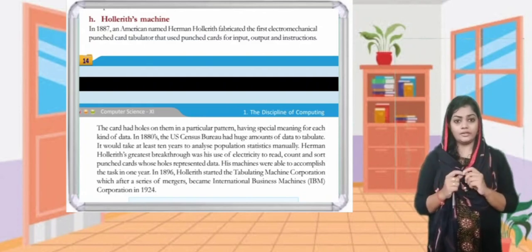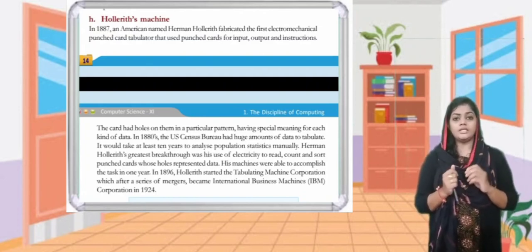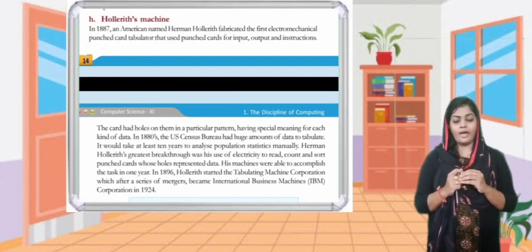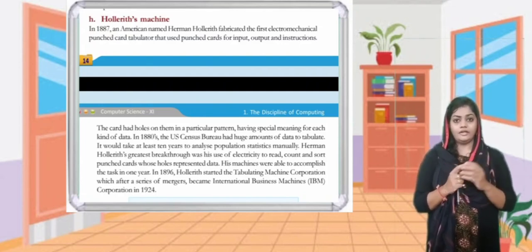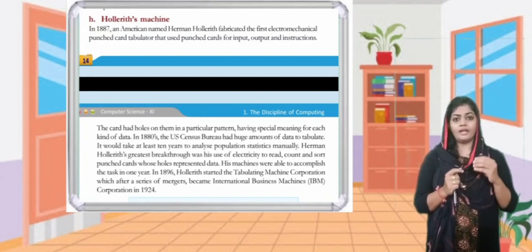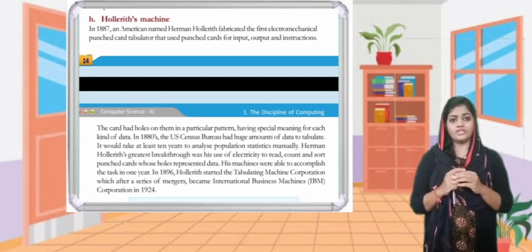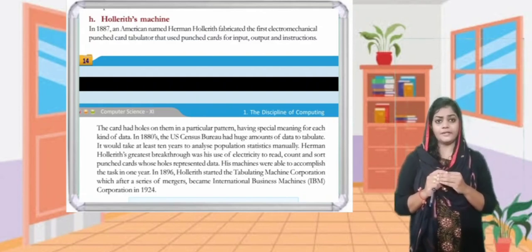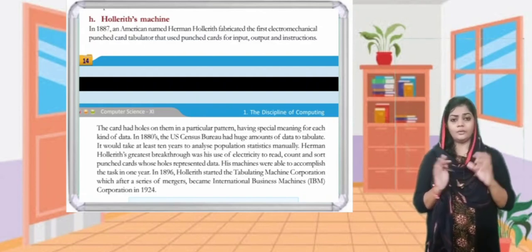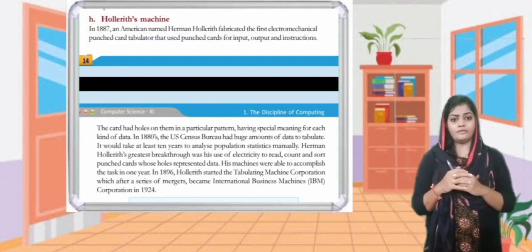In the 1880s, the US Census Bureau had a huge amount of data to tabulate. It would take at least 10 years to analyze population statistics manually.